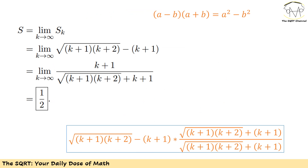Now things are a little more exciting. S is defined as the limit of Sk as k approaches infinity. Replacing Sk, I have the limit of √((k+1)(k+2)) − (k+1) as k goes to infinity. Here I have infinity minus infinity, which is obviously not good, so I'm going to rewrite this expression as a fraction.